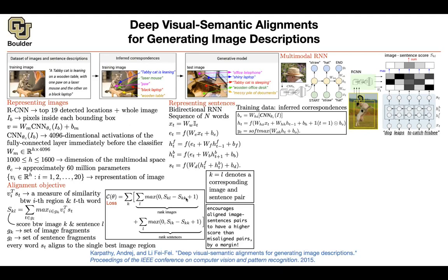A student asks: does every image have exactly one sentence that corresponds to it? In your dataset, yes — each image has only one sentence it corresponds to, and those sentences are unique. There is a one-to-one correspondence: this image doesn't correspond to two labels in your training data, there is only one label. And the opposite is true as well — for this sentence, there is only one image. In reality that might not be true, but in your training data it is, because it's under your control.